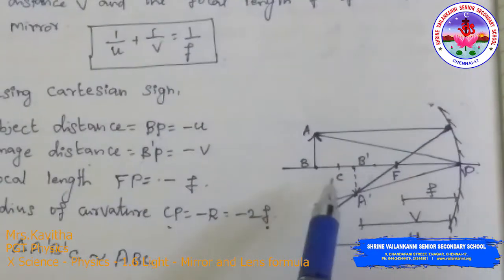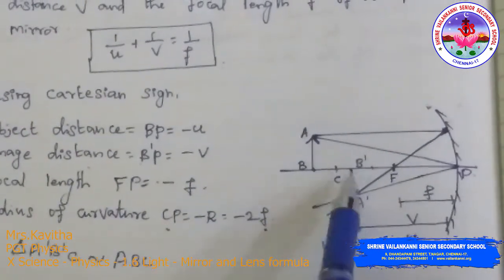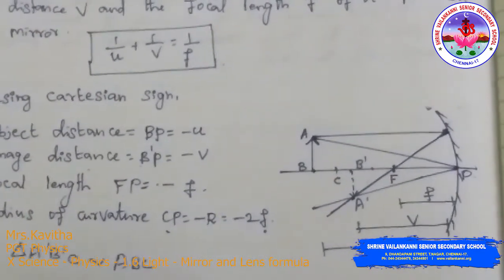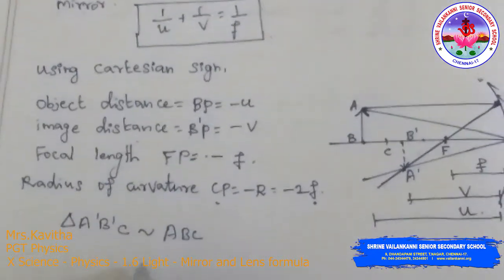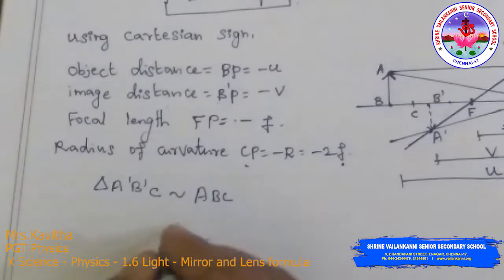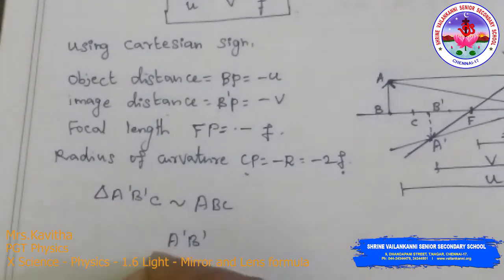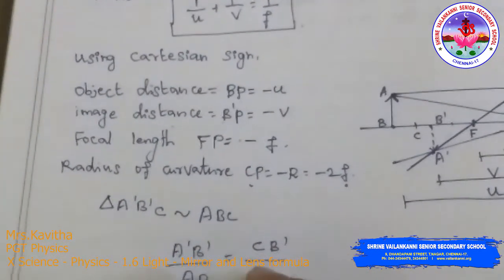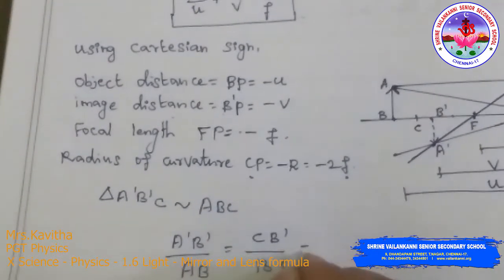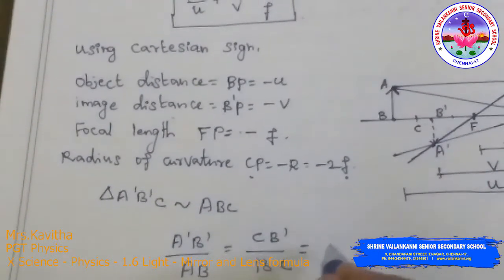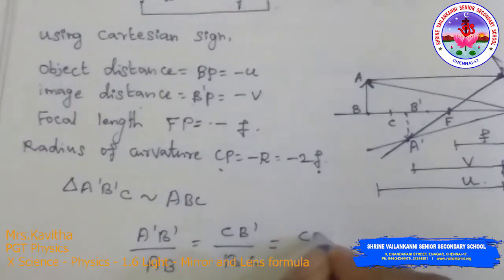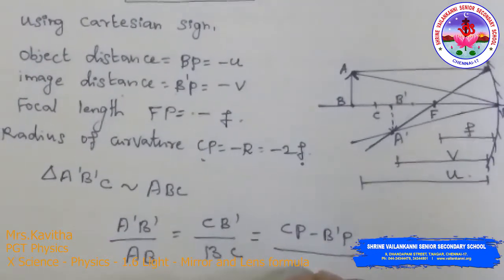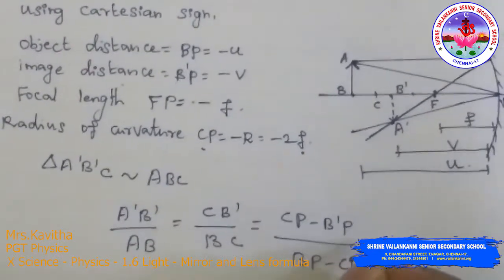From the similar triangles A'B'C and ABC, we get A'B'/AB = CB'/BC. Now CB' = CP − B'P = −R − (−V) = V − R, and BC = BP − CP = −U − (−R) = R − U. So A'B'/AB = (V − R)/(R − U), which simplifies to (−R + V)/(−U + R).